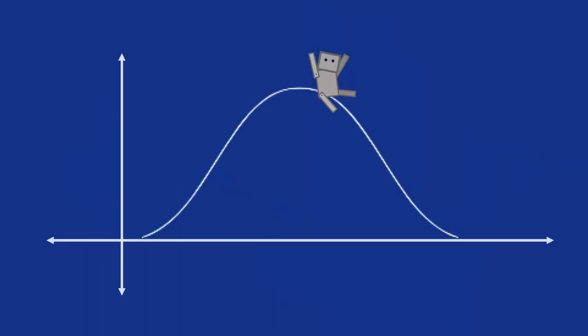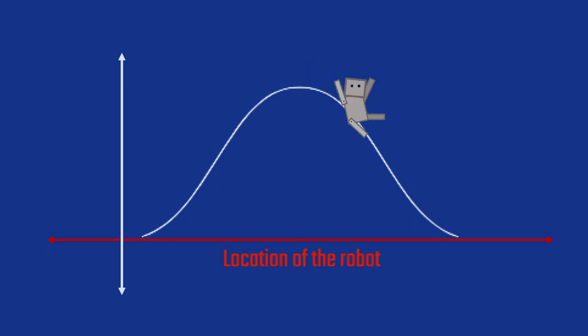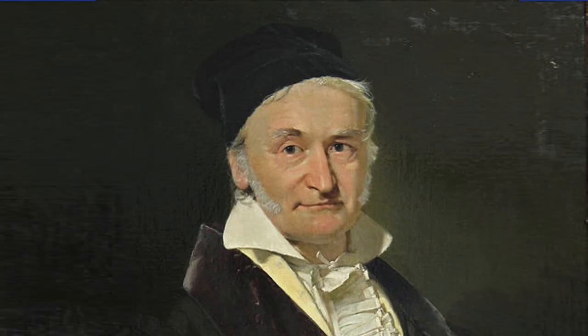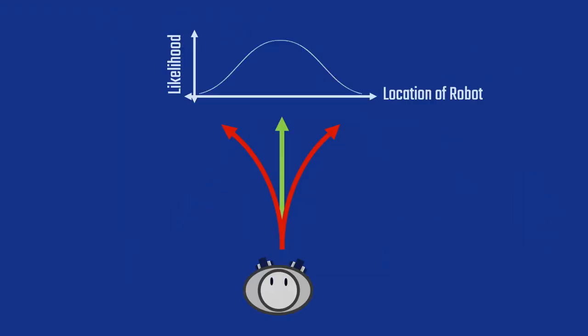This graph can tell you how to make your robot do things totally wrong. In this case the location of the robot is along the bottom and the likelihood that the robot is at that location is on the side. This curve is called a Gaussian curve after a guy named Gauss but it's also called a bell curve. When the robot moves it's most likely to end up where it's supposed to be but it's also very likely to end up near where it's supposed to be. It's unlikely to end up far from where it's supposed to be but it could be there. In fact the robot could wind up anywhere.